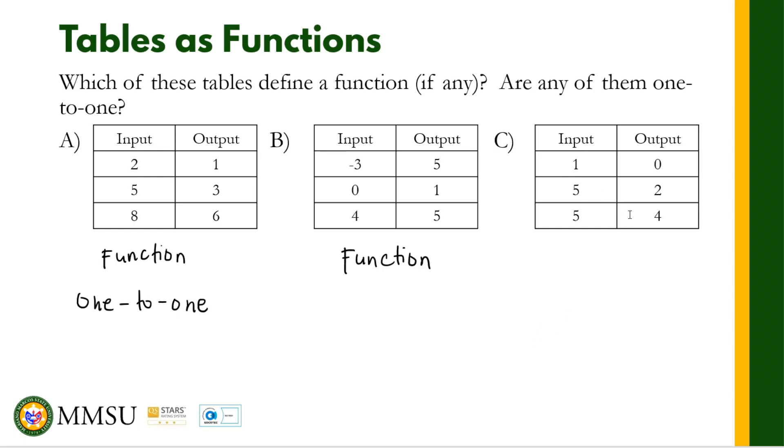For letter C, 1, 5, 5, 0, 2, 4. So look at the input value, there's a repeated 5. One input value 5, but two outputs appeared, 2 and 4. So basically, this is a one-to-many relation and this is not a function. Not a function because of the repetition of the input.